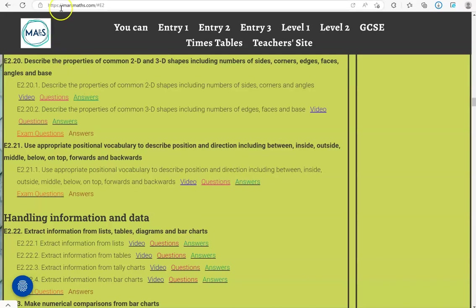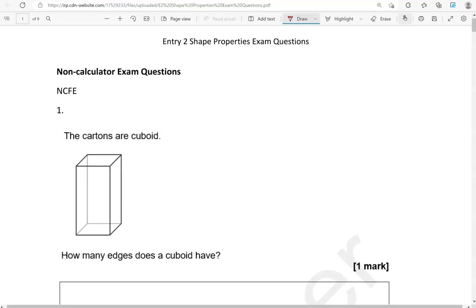You can locate the questions on the massmass.com website under Entry 2. The questions come from different exam boards. We'll start with the non-calculator questions, and then we'll move to the calculator questions. Here is the first one.